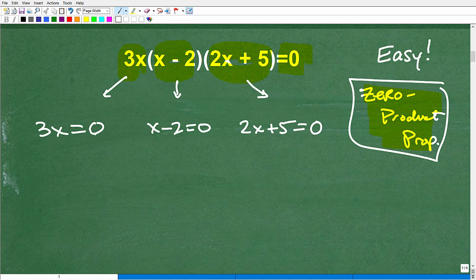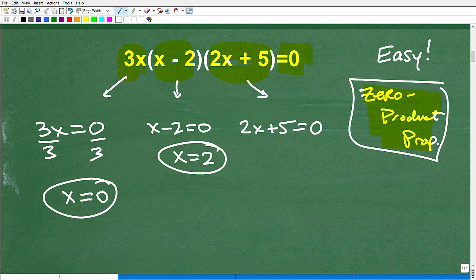So how do I solve 3x is equal to zero? We divide both sides of the equation by three, and I get x is equal to zero. Here, x minus two is equal to zero. That's super easy. The solution there is x equals two. If you're having any trouble with this, by the way, you can check out my videos on basic equation solving in my pre-algebra or algebra playlist. But if you're watching this video and you're struggling with these basic equations, then this is kind of maybe too advanced for you. All right, so 2x plus five is equal to zero. I have 2x is equal to negative five, or x is equal to negative five halves.